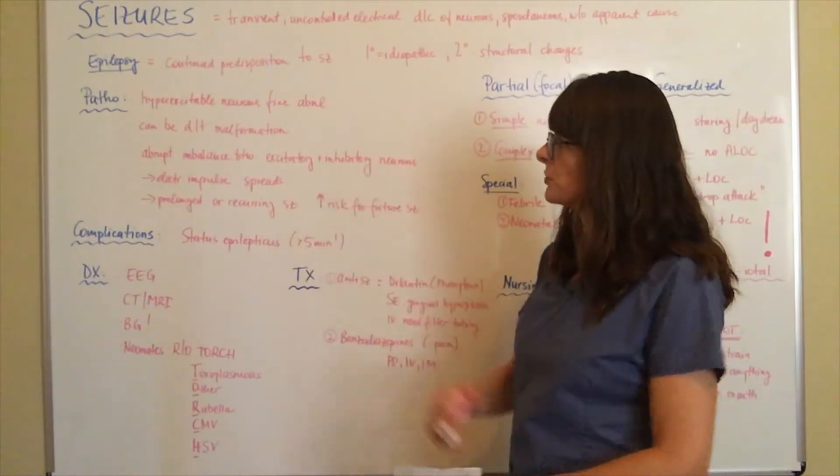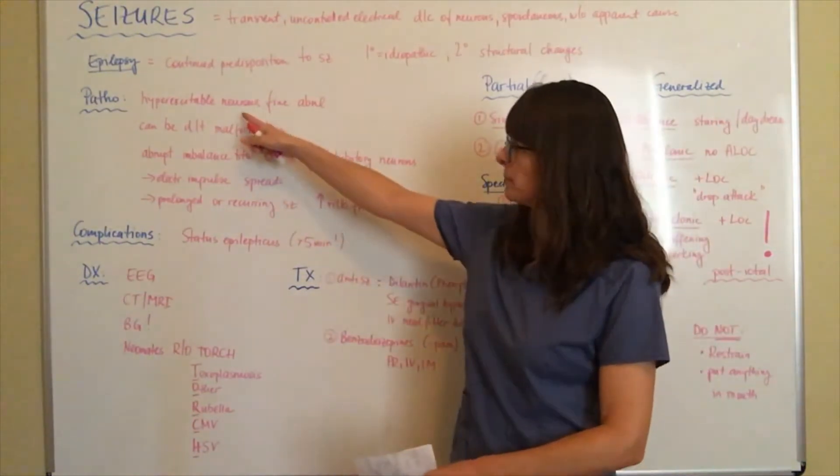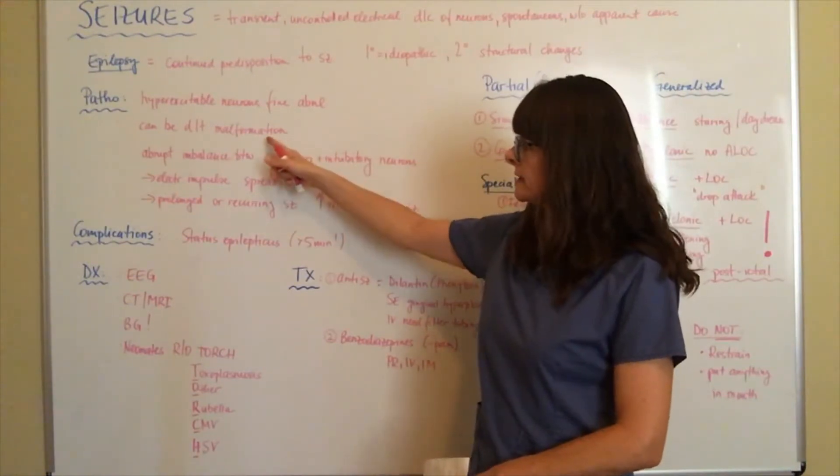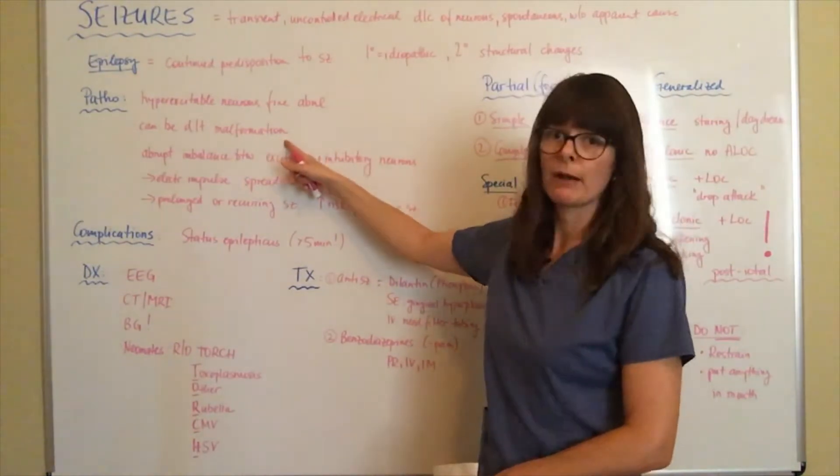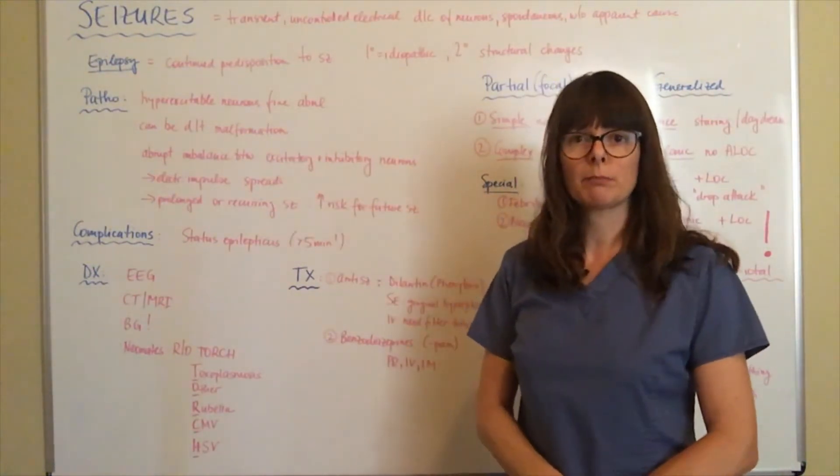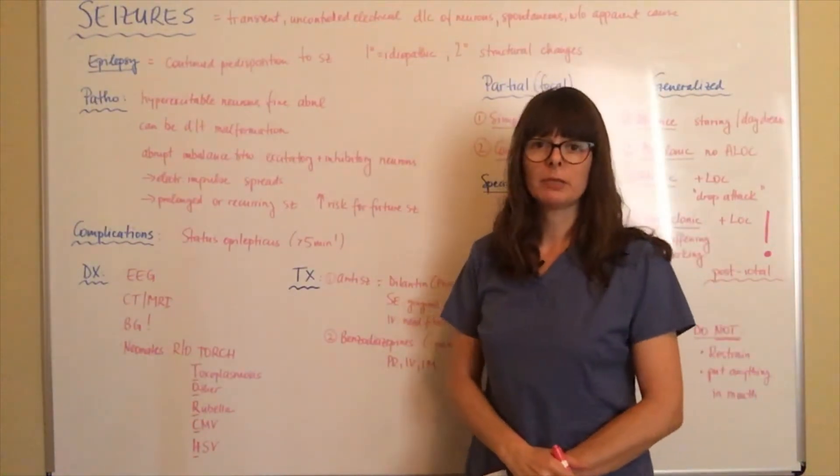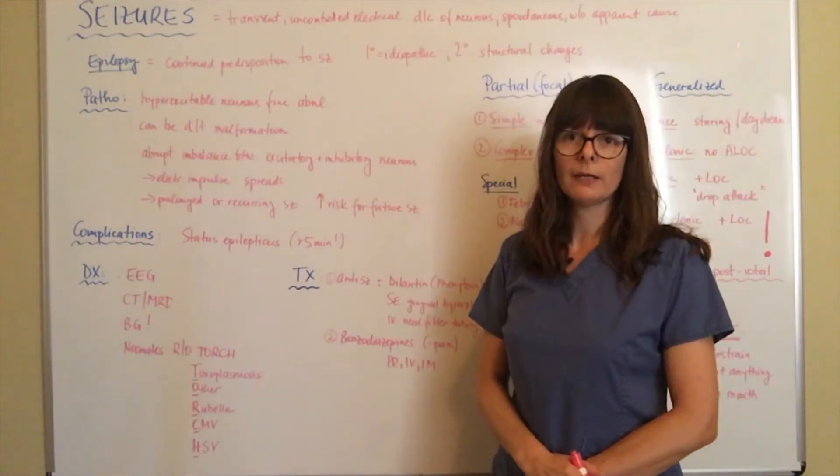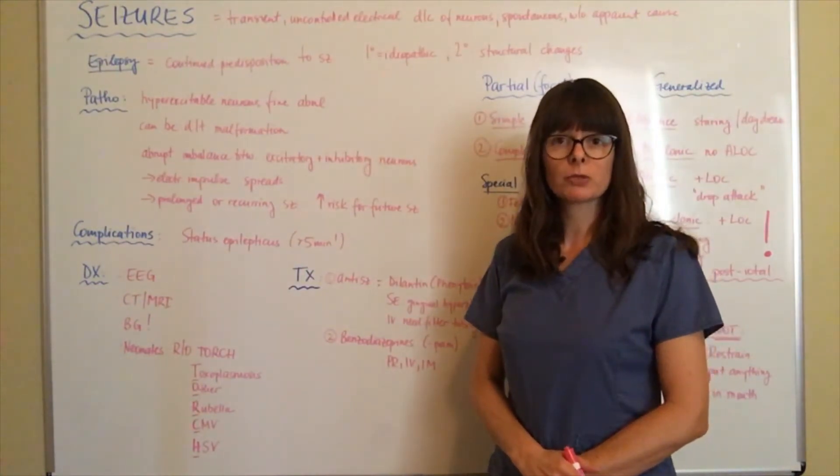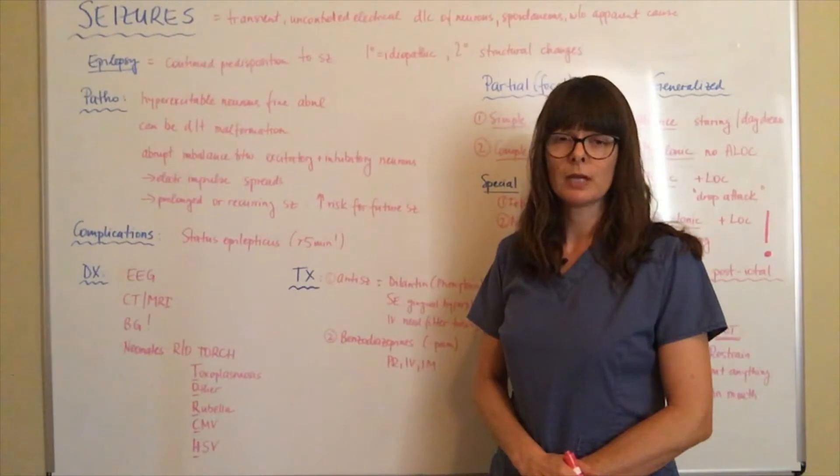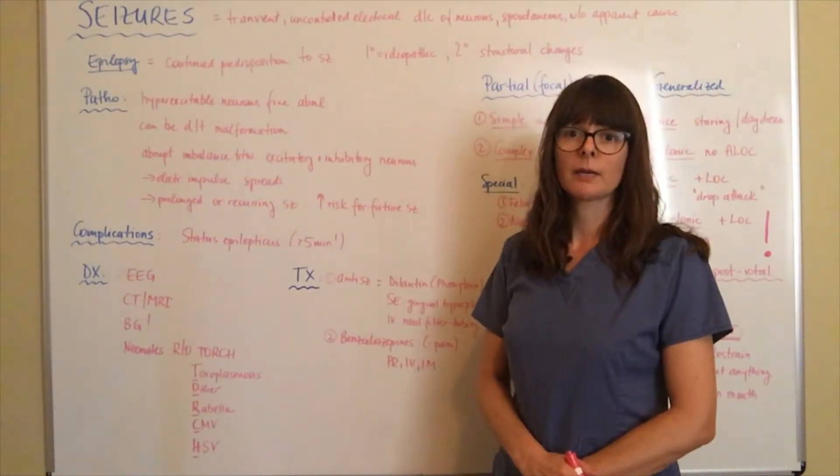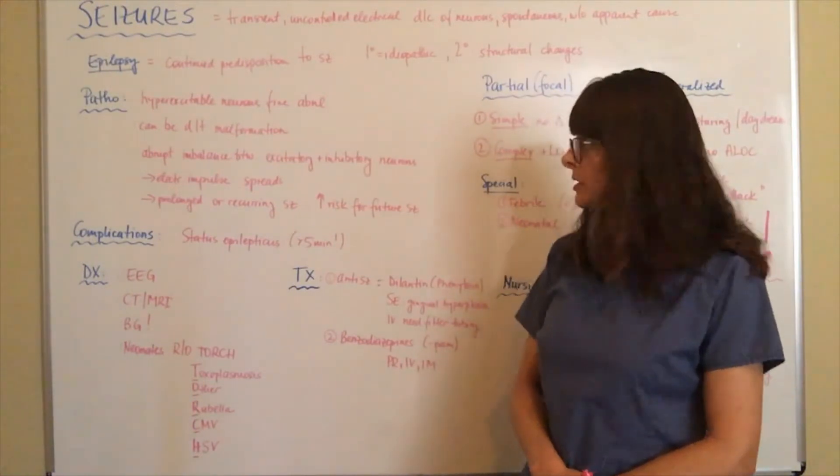The pathophysiology: these hyperexcitable neurons fire abnormally, and this can be due to any kind of malformation. That might be a brain tumor, an arteriovenous malformation in the brain, scar tissue from a stroke, or from a traumatic head injury. All kinds of structural changes in the brain can predispose a patient to having seizures.